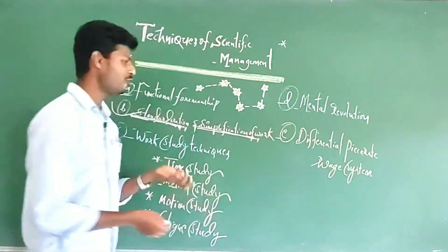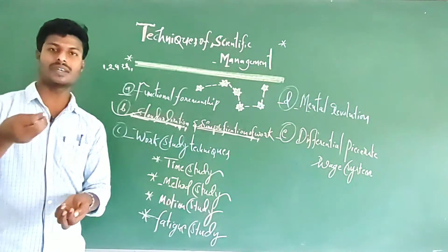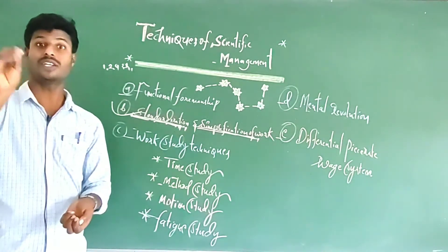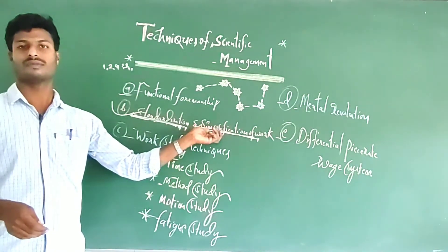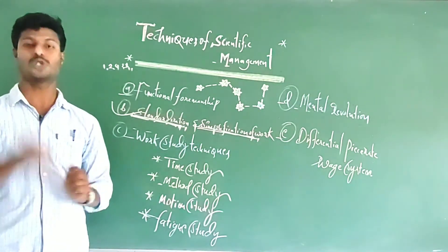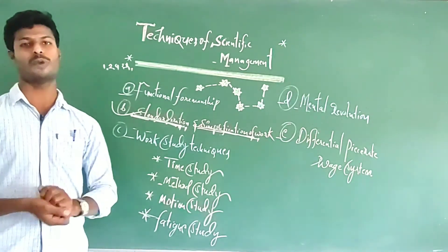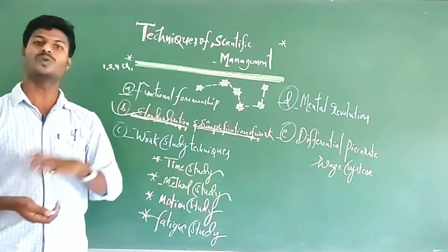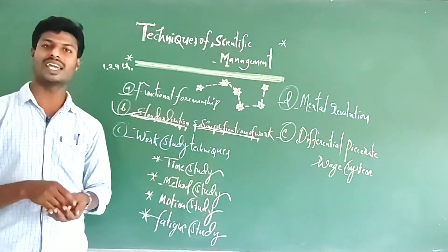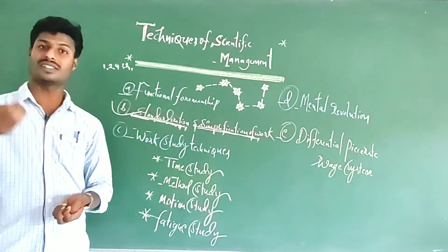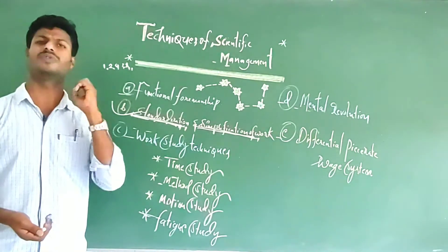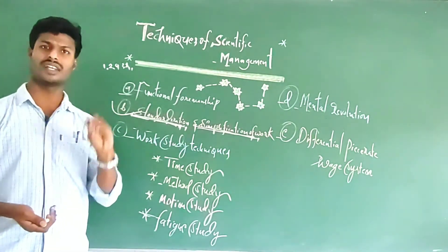The next technique is simplification of work. Simplification means putting an end to unnecessary activities in the organization to make work very simple and user-friendly for the employee. Simplification of work is achieved by minimizing, eliminating, and reducing unnecessary diversity, unnecessary activities, unnecessary steps, and unnecessary movements of work in the organization.